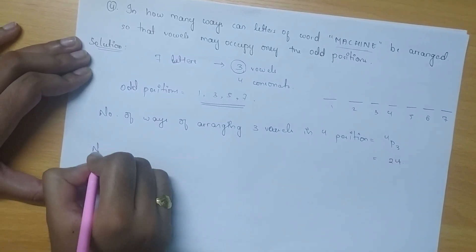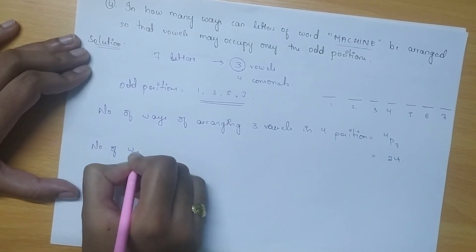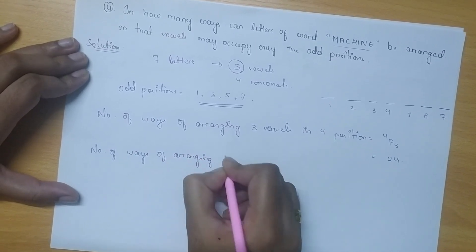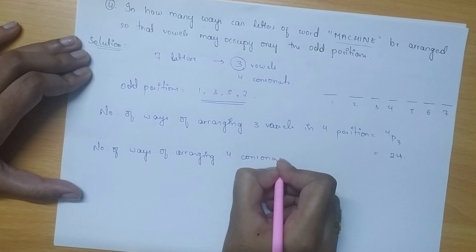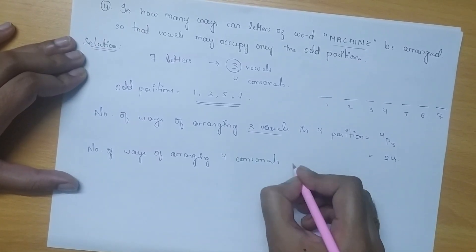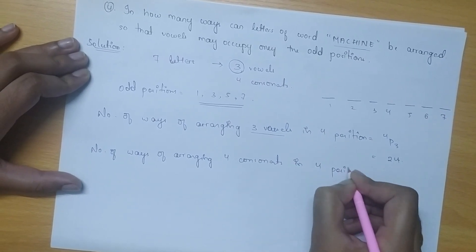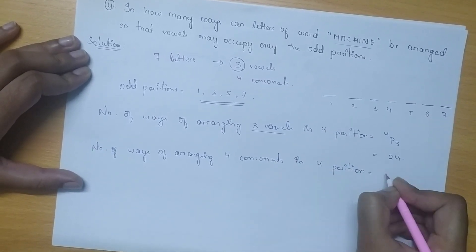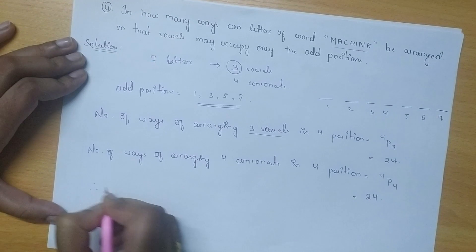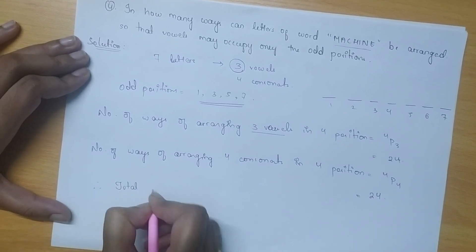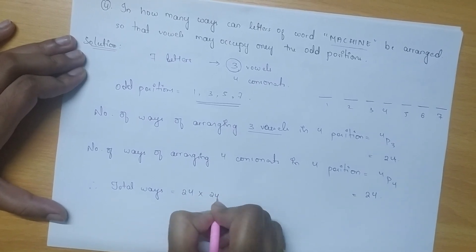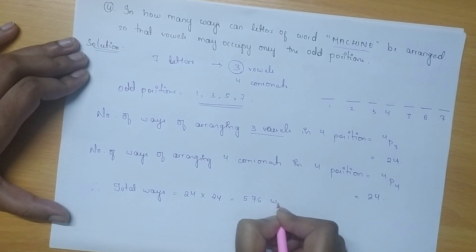The number of ways of arranging 4 consonants after placing the 3 vowels in the 4 positions will be 4P4, which is also equal to 24. Therefore, the total number of ways of arrangement will be 24 multiplied by 24, which is equal to 576 ways.